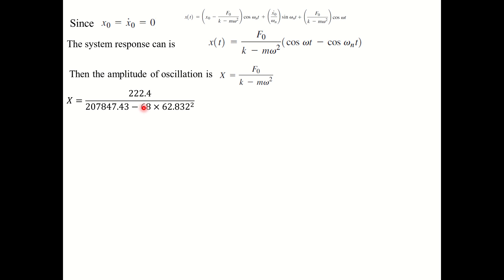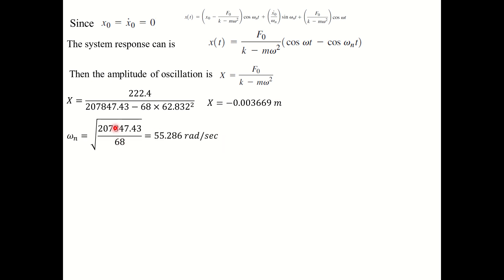Mass = 68 kg comes from 667 / 9.81. The forcing frequency ω = 62.832 rad/s. For natural frequency: ωₙ = √(k/m) = √(207,847.43 / 68) = 55.286 rad/s. Now we have all the values needed to write the system response.